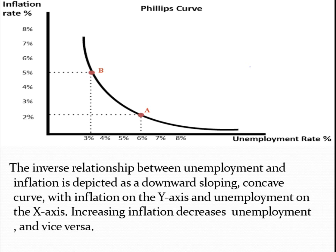In this slide you can see the graph of the Phillips Curve. The curve is downward sloping — the x-axis denotes the unemployment rate and the y-axis denotes the rate of inflation. When the rate of inflation is very low, for example two percent, the economy will be facing a high rate of unemployment, that is six percent, denoted by point A on the Phillips Curve. When the economy faces a high rate of inflation, say five percent, the rate of unemployment is very low at three percent, denoted by point B on the Phillips Curve.